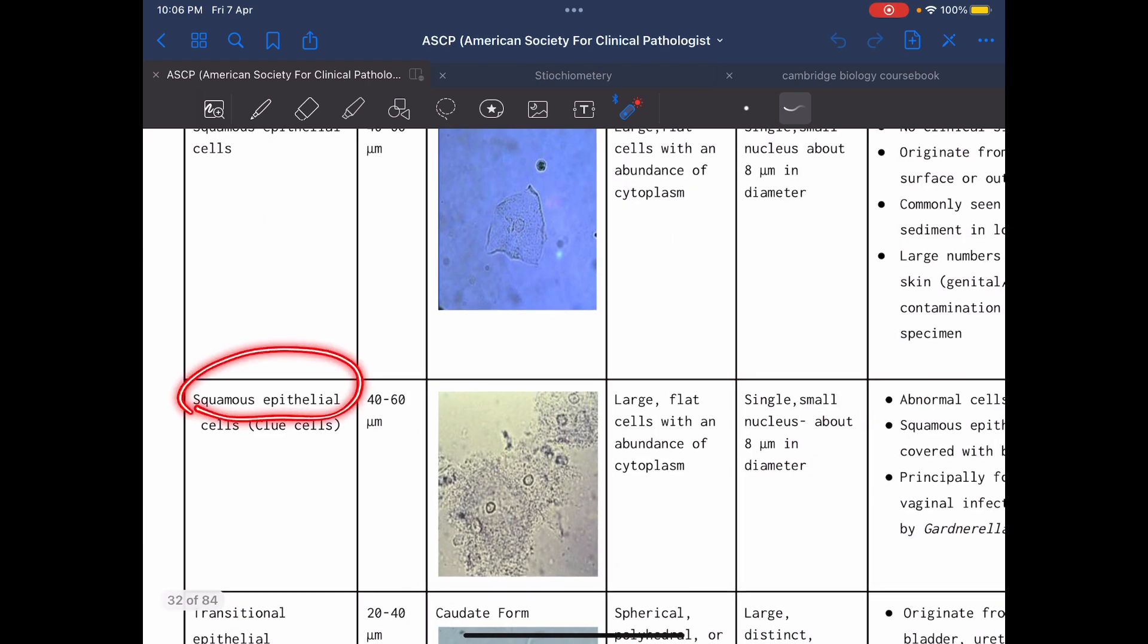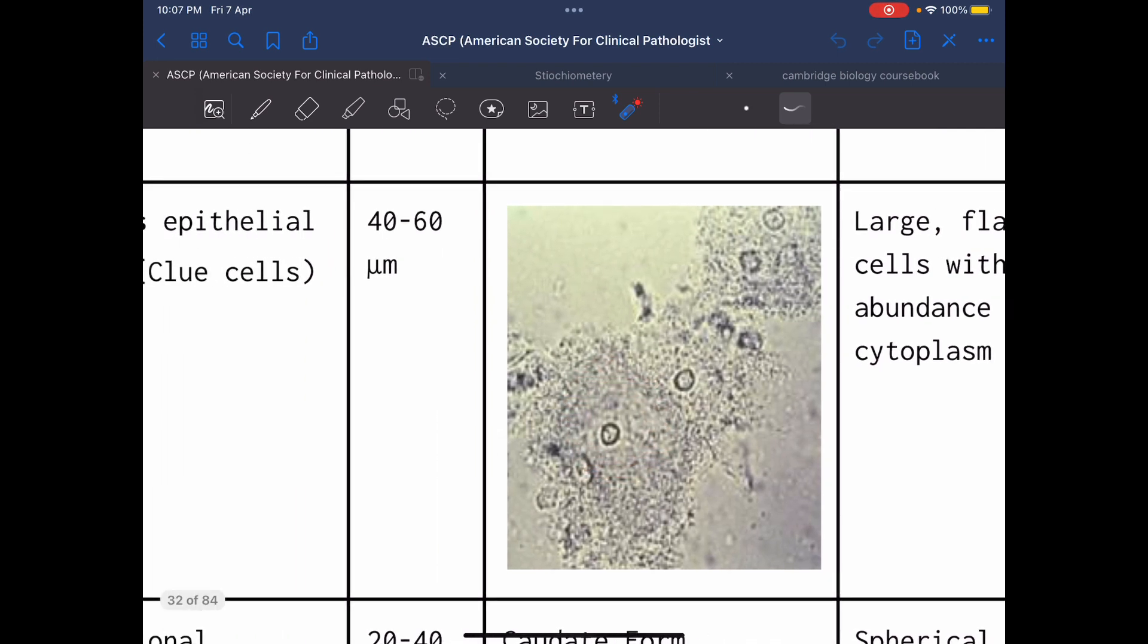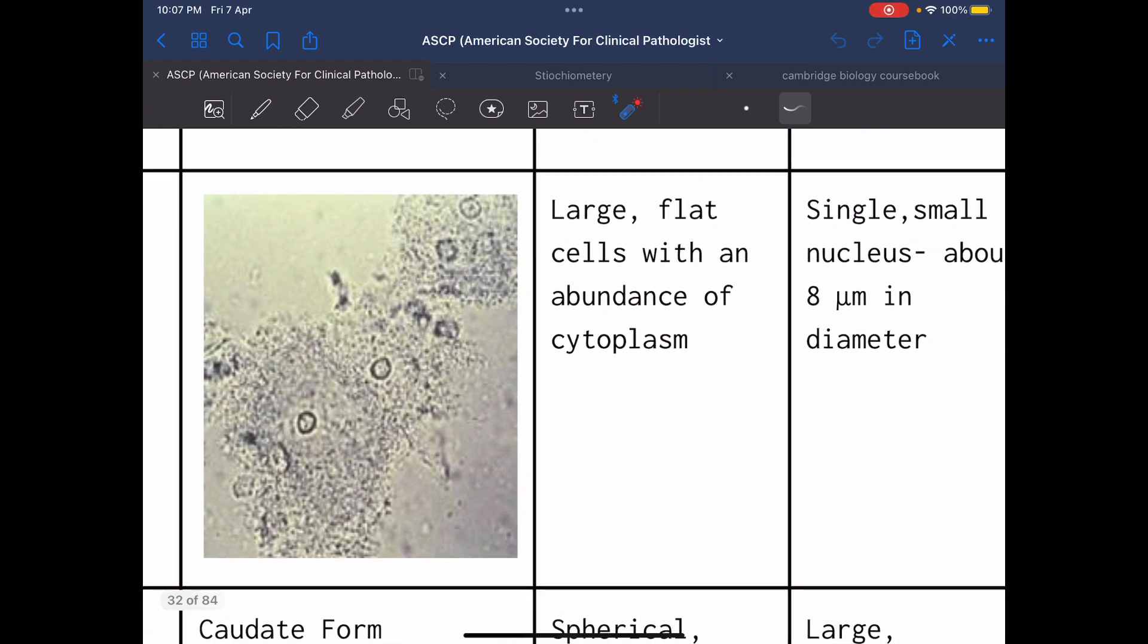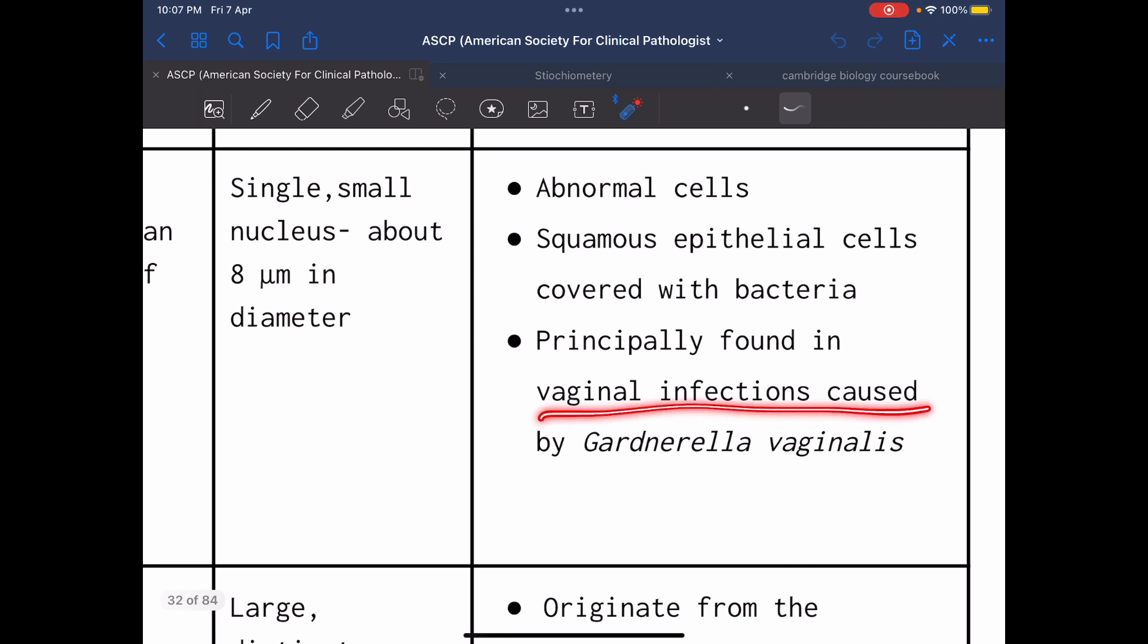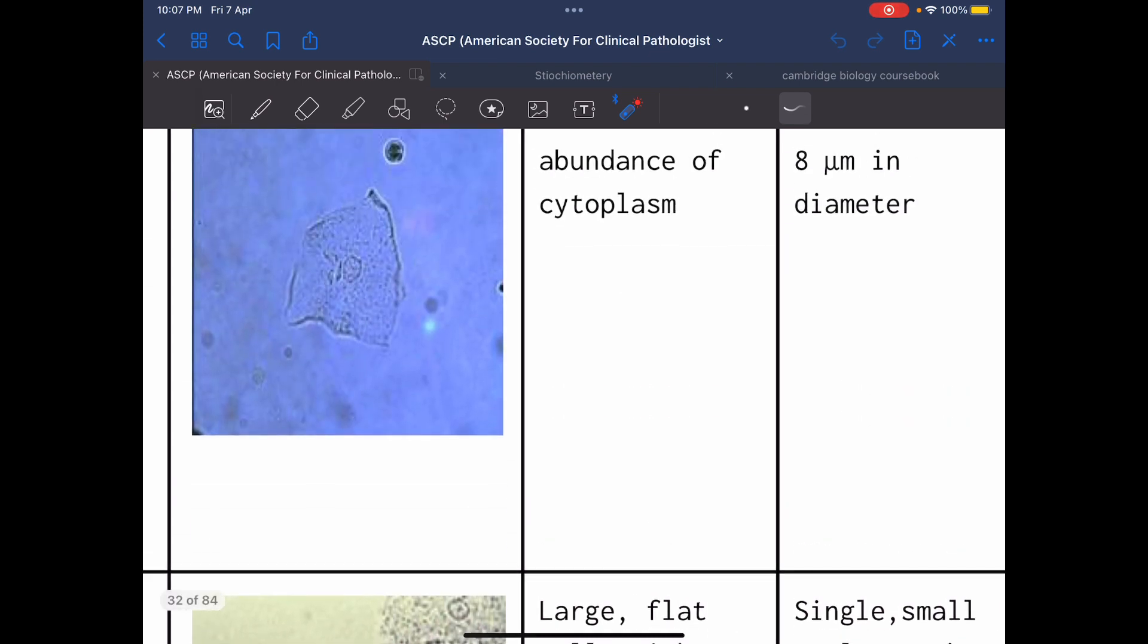Squamous epithelial cells are called clue cells. It is the same epithelial cells, but it is covered with bacteria. As we see here, this is the epithelial cell covered with many bacteria cells. And this is called clue cells. This is indication of vaginal infection caused by Gardnerella vaginalis, which causes vaginosis. So this is abnormally found in urine, while squamous cells are normally found in urine in limited number.